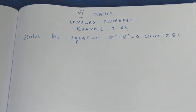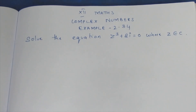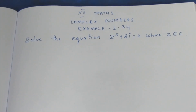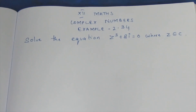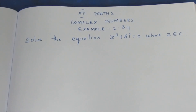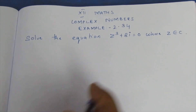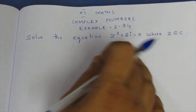Hello viewers, I am Mighty. In a 12th-grade complex numbers example 2.34, the question is: solve the equation Z³ + 8i = 0, where Z belongs to complex numbers.